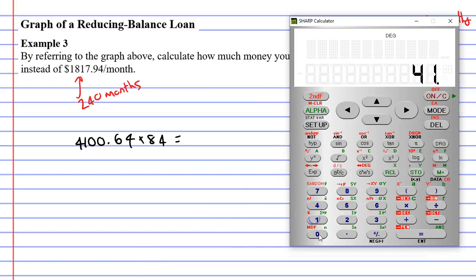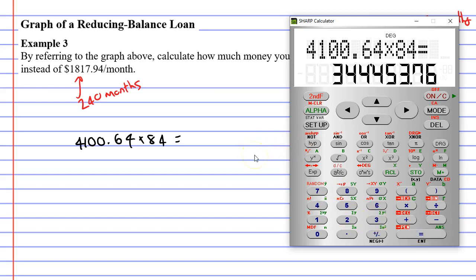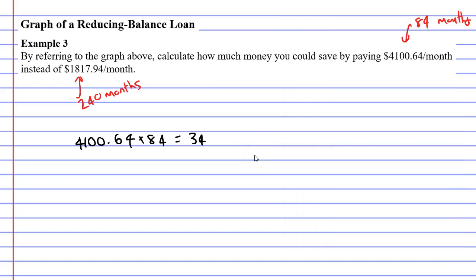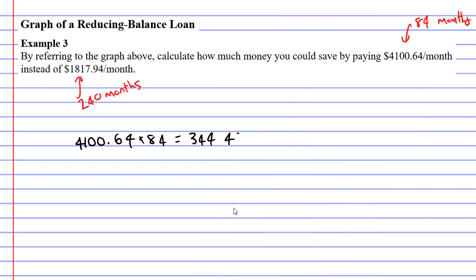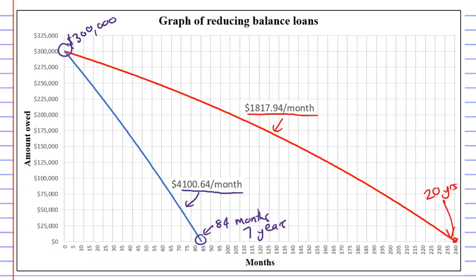So $4,100.64 is what we're paying per month. And we're doing this 84 times. We're doing it over a period of 84 months. So we get $344,453.76. So that's the total amount you would end up repaying for this loan, the loan being $300,000.